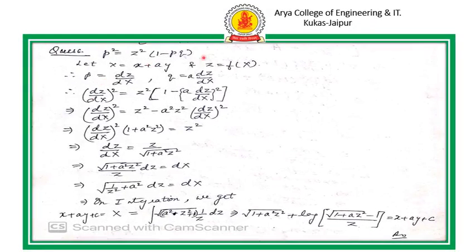One more example of standard form second: the given equation contains only the terms of P, Q, and Z. Let Z equals a function of capital X, where capital X equals X plus AY. Substituting P equals dZ/dX in the given relation, we find the value of dZ/dX after solving. We then separate the terms of Z and X — taking Z along with dZ on the left-hand side and the terms of capital X on the right-hand side. On integration, we get the relation between capital X, Z, and the arbitrary constant.